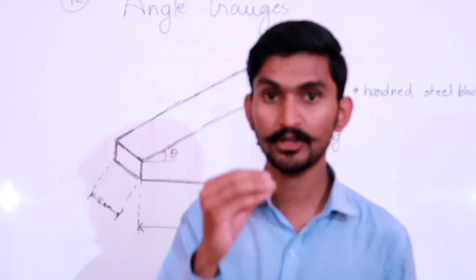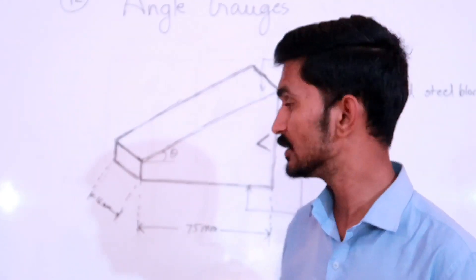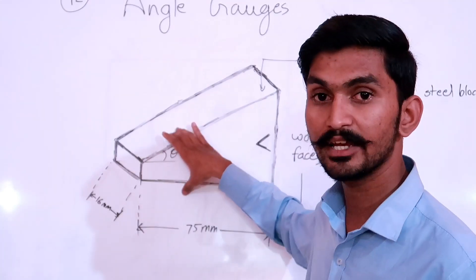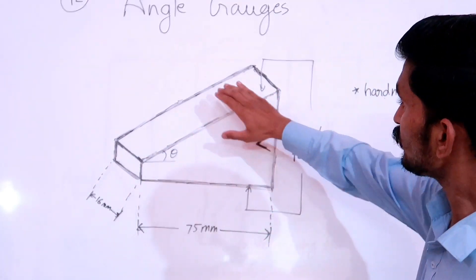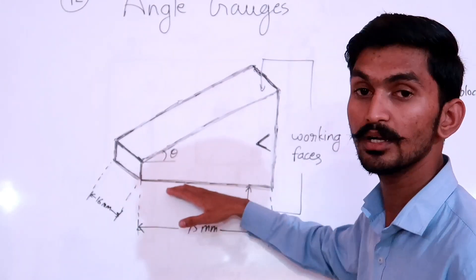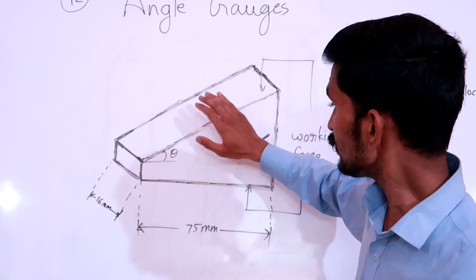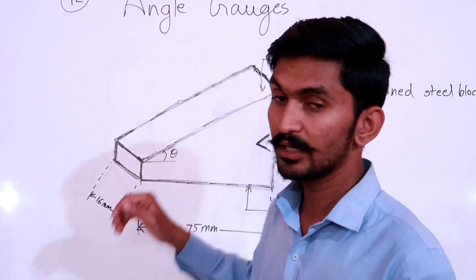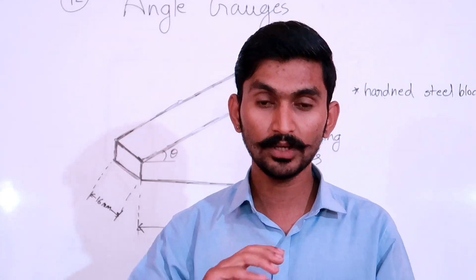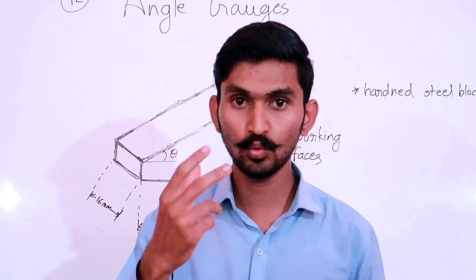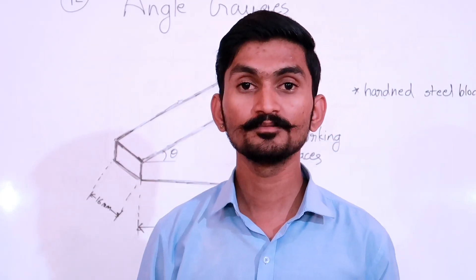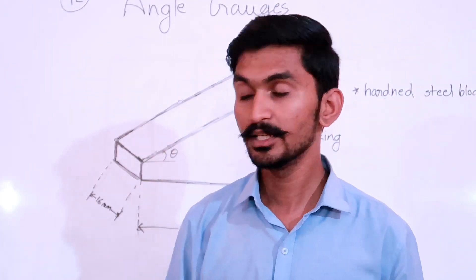They are very precisely and accurately manufactured. Angle gauges have two working phases — this one is a working phase and this one is also a working phase. Just as I explained in the slip gauges video, you can wring them together to make a block of desired length. Similarly, angle gauges can be combined.